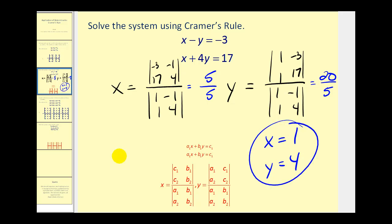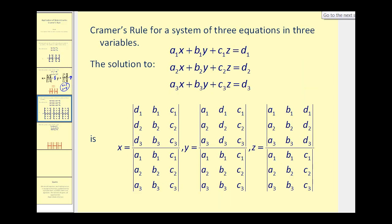Let's go ahead and take a look at a system of three equations and three variables. Now it looks like a lot's going on here, but the pattern does remain the same. The denominators of each variable are a determinant formed by the coefficients of the x, y, and z terms. The numerator for x will come from replacing the x coefficients with the constants, the numerator for y from replacing the y coefficients with the constants, and the numerator for z from replacing the z coefficients with the constants.